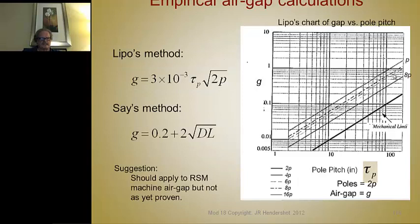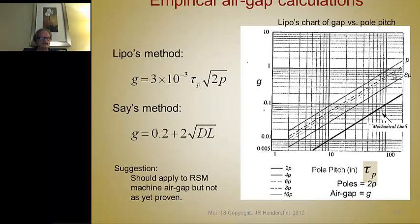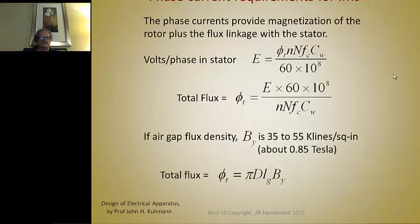Here's Lippo's method and SAE's method for empirical air gap calculations. You can use this method, and in my opinion this same method should apply for reluctance synchronous machines (RSMs) as well. That hasn't been proven for sure, but I can't think of any reason why it isn't applicable. The phase current requirements are given by these formulas.